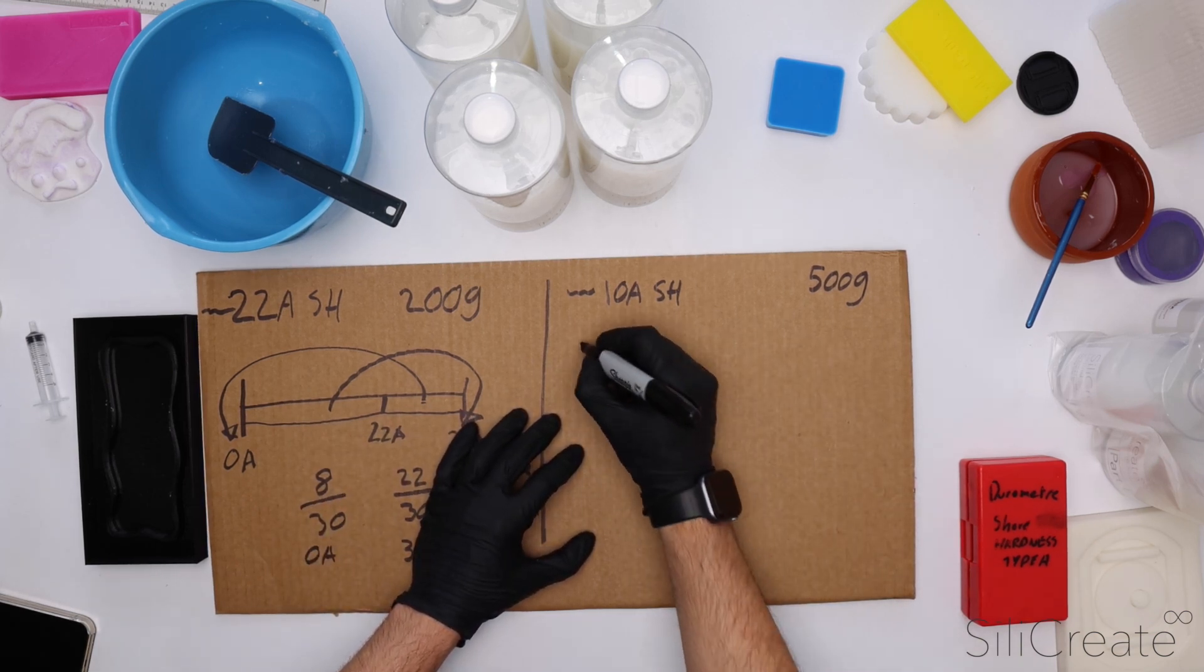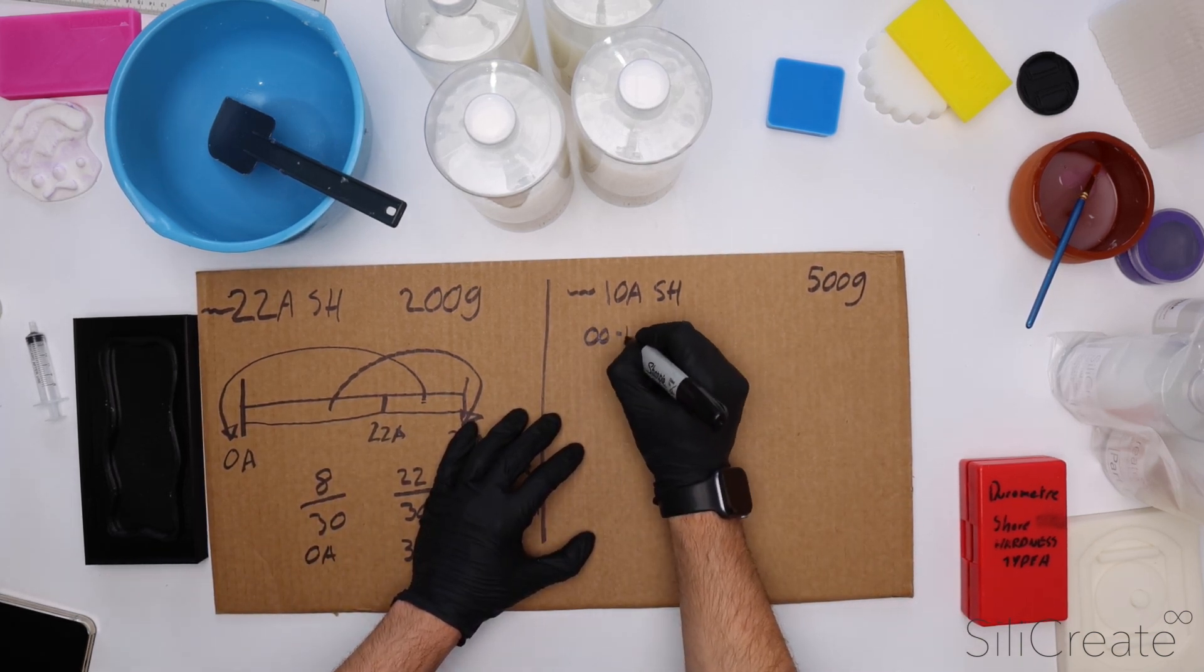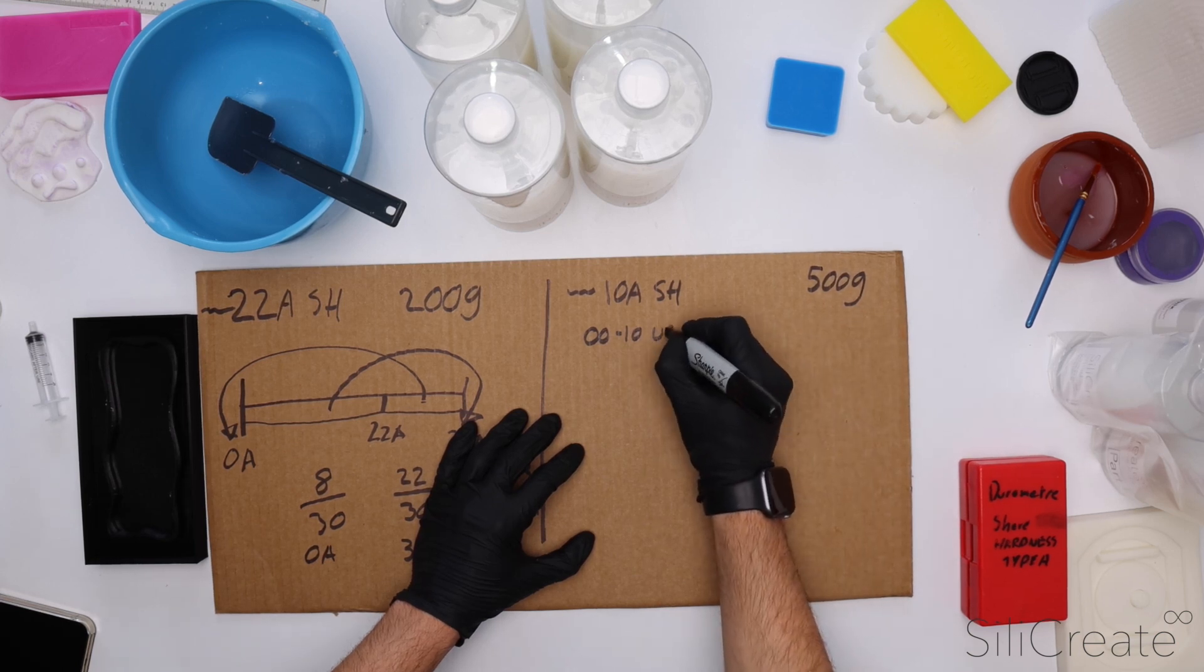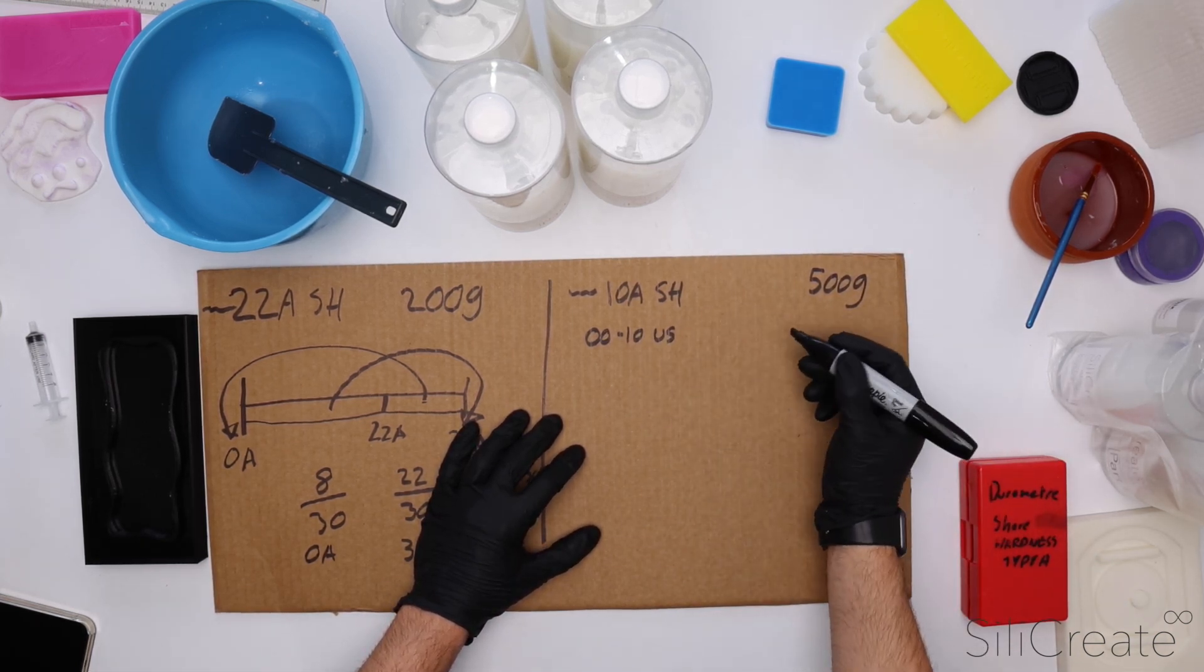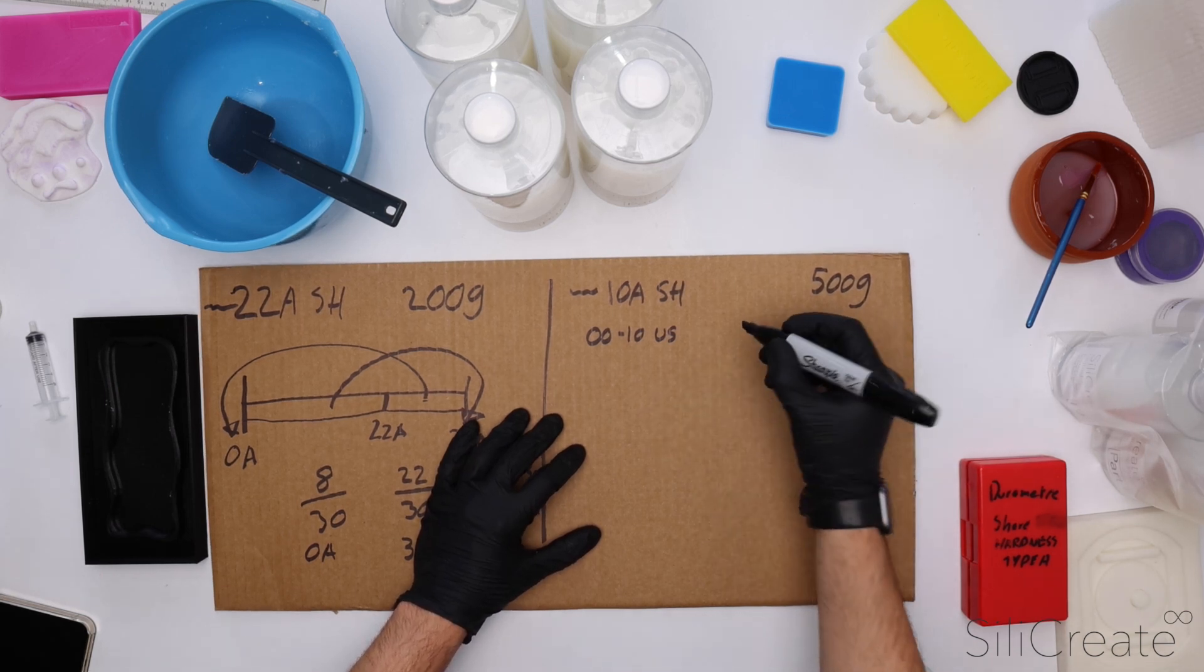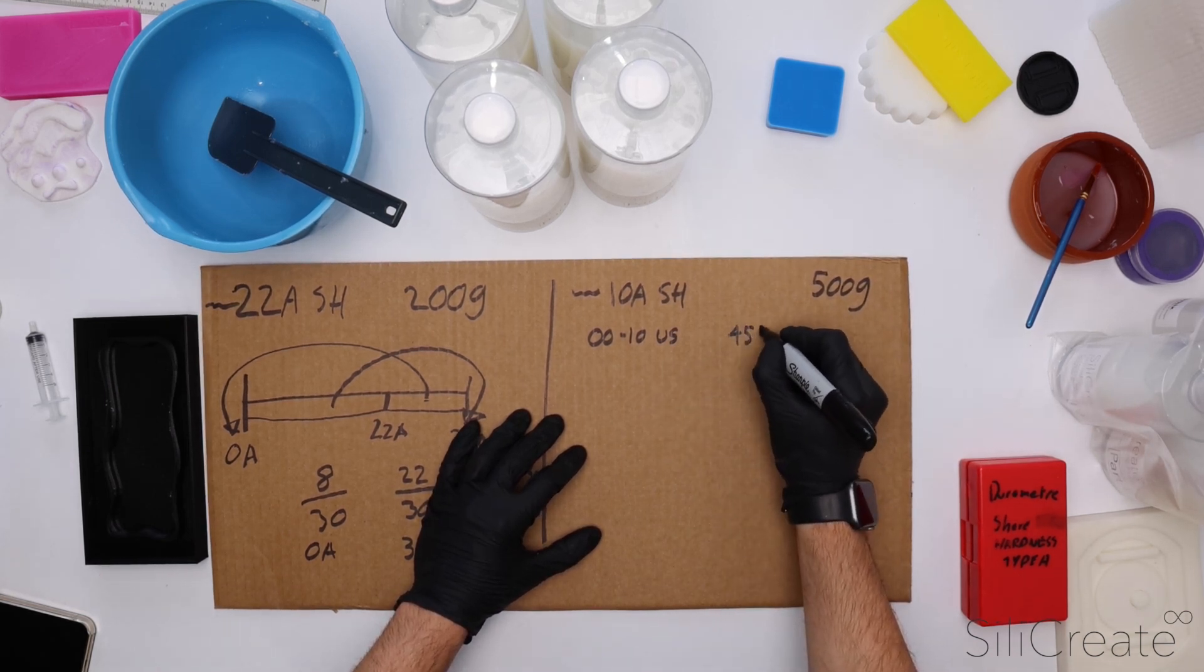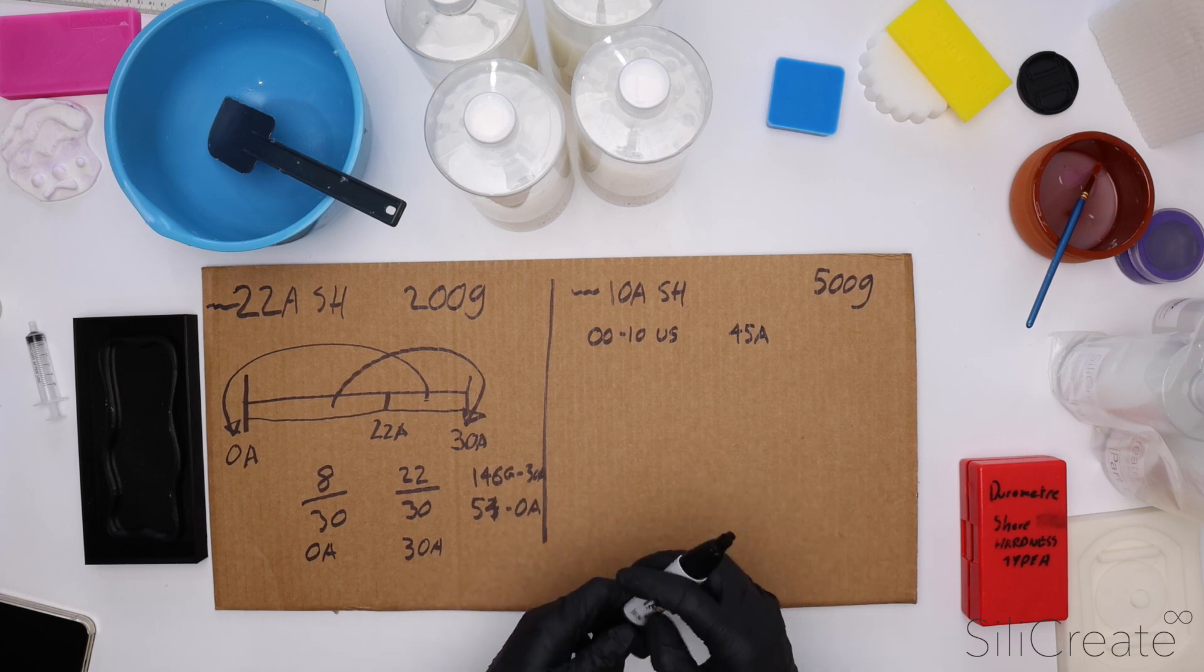We're going to start, we know we've got 0010 ultra soft. This is our ultra soft silicon and we might have say our 45A silicon. I'm making this quite hard for myself.